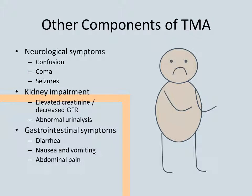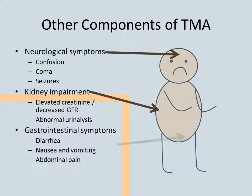This process may damage other organs. Presenting symptoms often involve the central nervous system, the kidneys, and the GI tract. All TMAs overlap in these systemic manifestations.